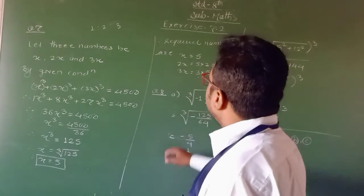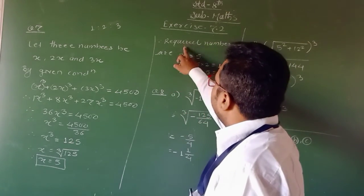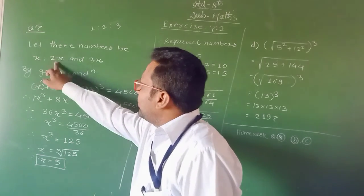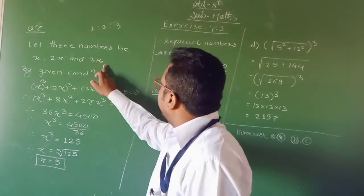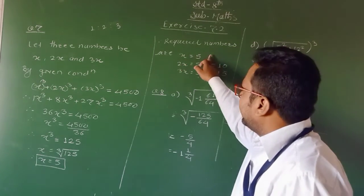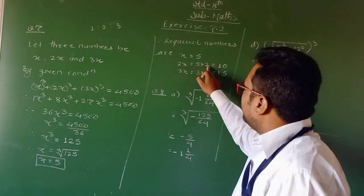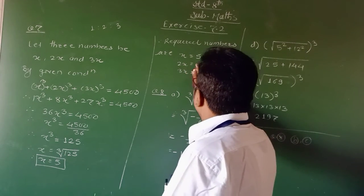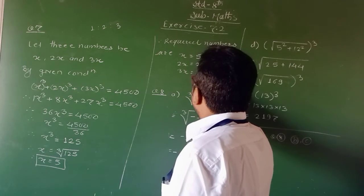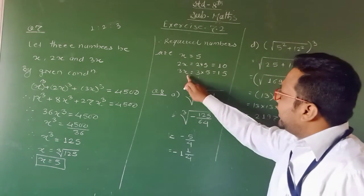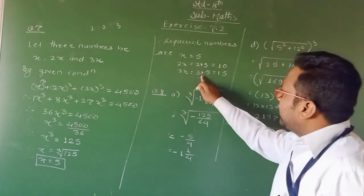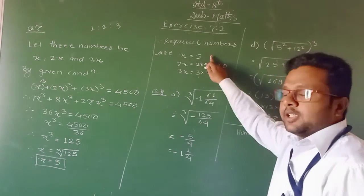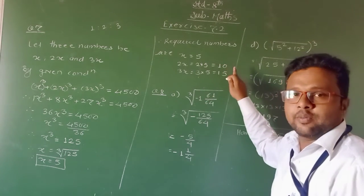Then, what are the required numbers? The numbers we considered are x, 2x, and 3x. x = 5. 2x = 2 × 5 = 10. And 3x = 3 × 5 = 15. These are the 3 required numbers.